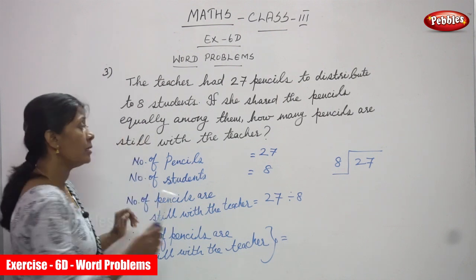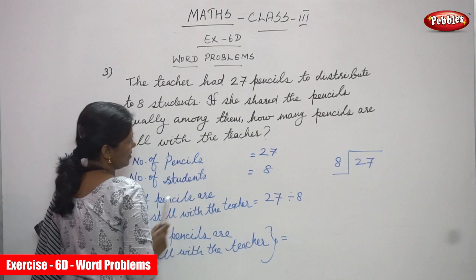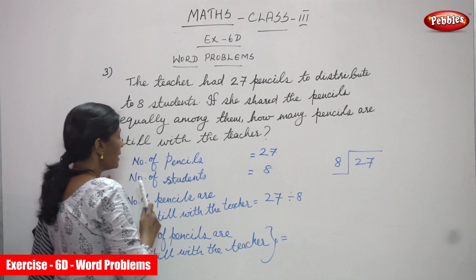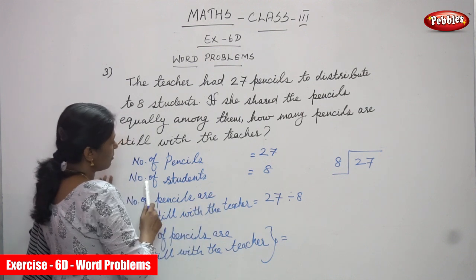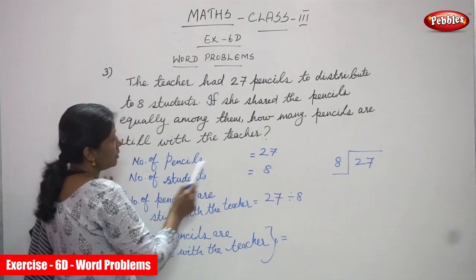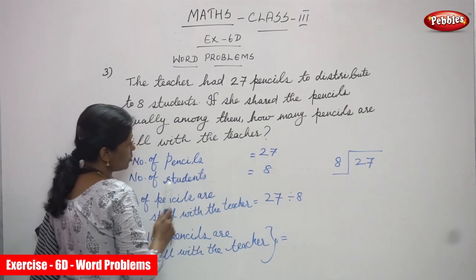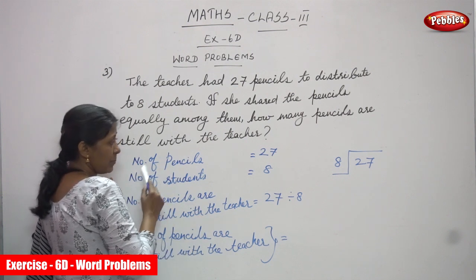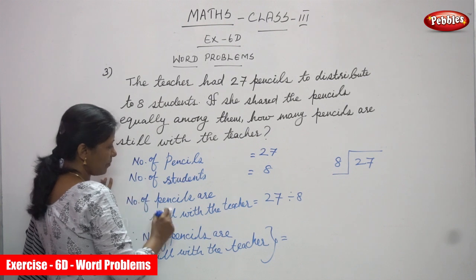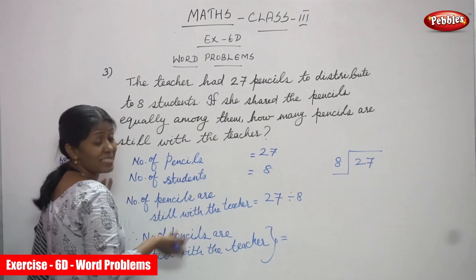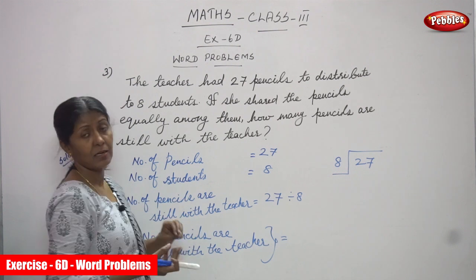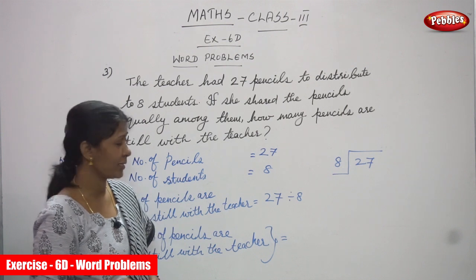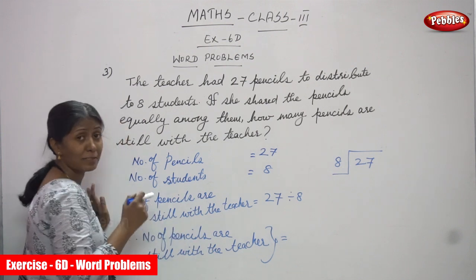So total number of pencils is what? 27. Okay, 27 pencils. Number of pencils the teacher had: 27. Number of students: 8. So total number of pencils is 27, number of students are 8. The teacher shared the pencils with the 8 students. So how many pencils are still with the teacher? That means the remaining pencils — how many pencils are remaining with her? That is the question you have to find out.